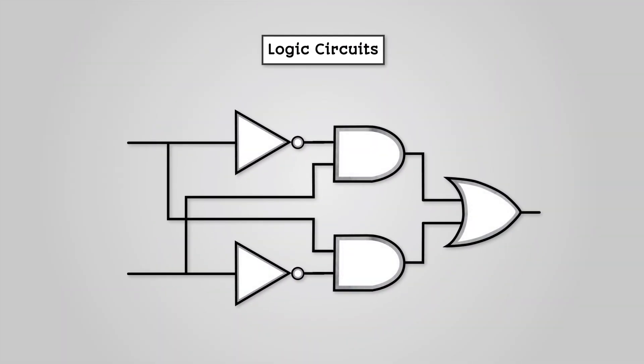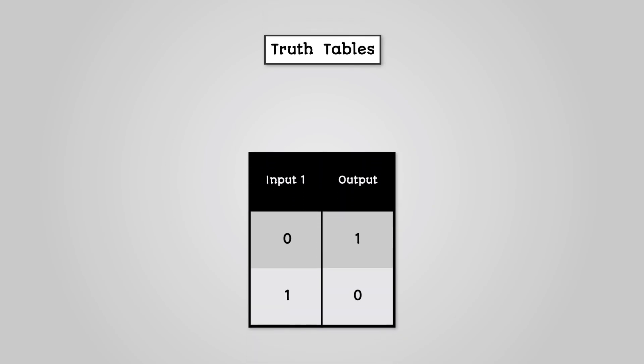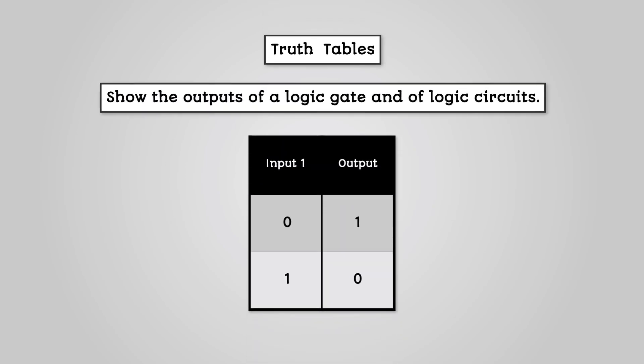We've looked at how logic circuits can be drawn as diagrams with inputs and outputs. Another way of representing these is to draw a circuit as a truth table. Truth tables are used to show the outputs of a logic gate and of logic circuits. We create them by drawing out a table with columns for each of the inputs and outputs in our logic circuit. The table also needs to have enough rows to represent every single possible combination of inputs.